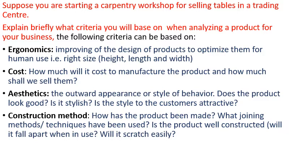Think about things you have bought or seen — a firm chair, or even furniture that is homemade — you can see the different styles that customers have chosen. The next criterion is construction method: how has the product been made? What draining methods and techniques have been used? If the product were constructed poorly, will it fall apart when moved? Or will it easily scratch? That needs consideration. You should have that in mind.